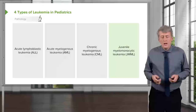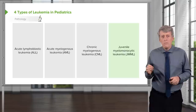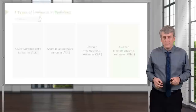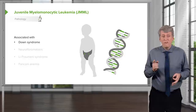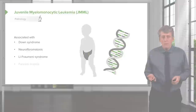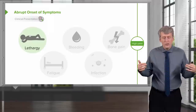Lastly, we'll talk briefly about juvenile myelomonocytic leukemia, or JMML. JMML is very rare, usually diagnosed before the age of three, and the etiology is basically unknown. It is associated with a few genetic conditions like Down syndrome, neurofibromatosis, Li-Fraumeni syndrome, and Fanconi anemia.